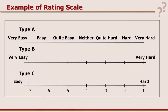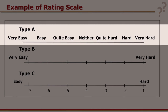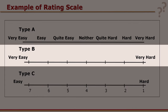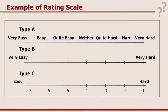There are 3 different types of rating scale formats. Type A has 7 labeled points: very easy, easy, quite easy, neither, quite hard, hard and very hard. The rater marks on that scale. Type B goes from very easy to very hard with nothing written in between — only points — so the rater judges on a continuum between the two endpoints.